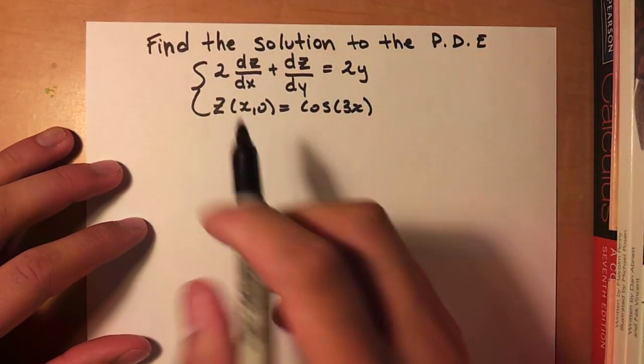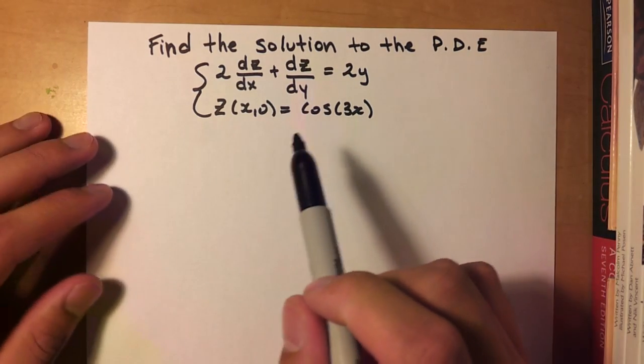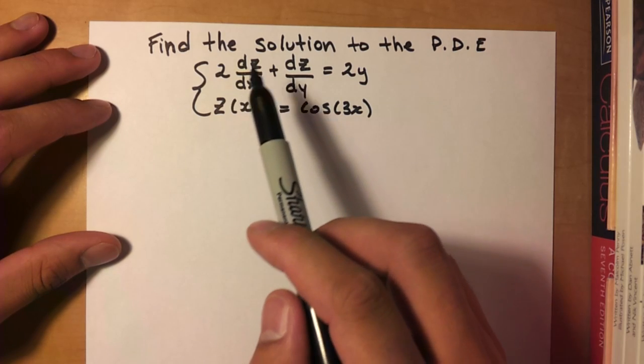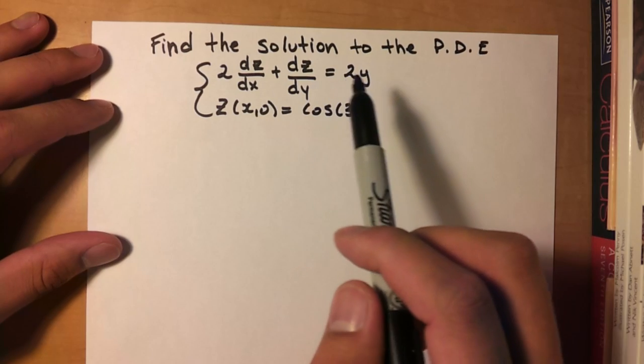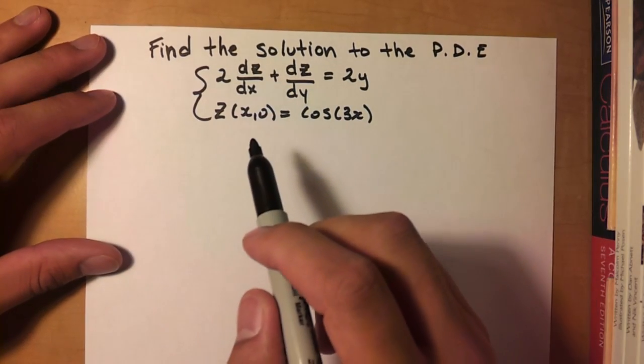Alright, so here's our problem. Find the solution to the partial differential equation, or PDE. So you're given 2 dz over dx plus dz over dy is equal to 2y, and you're given some initial condition.